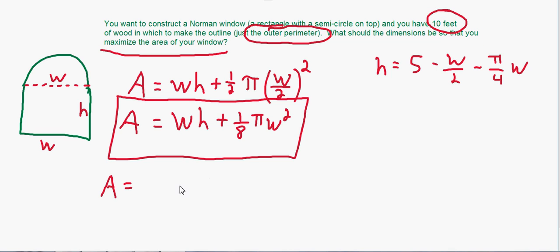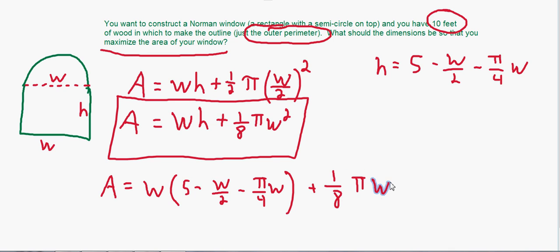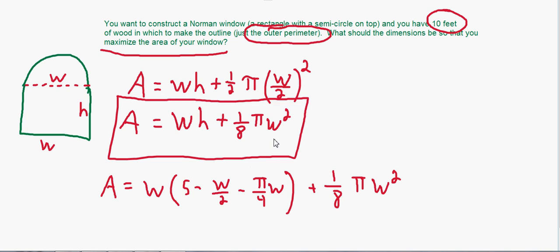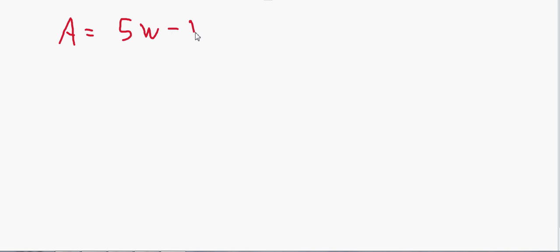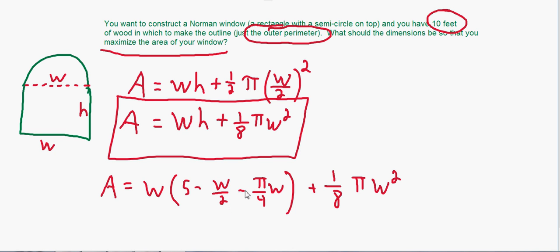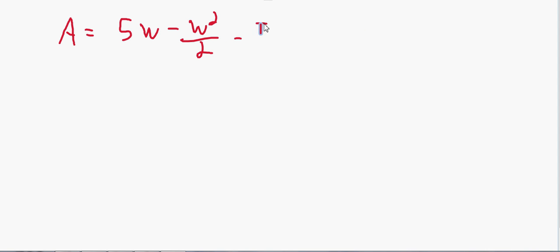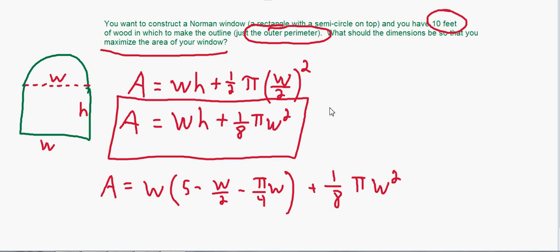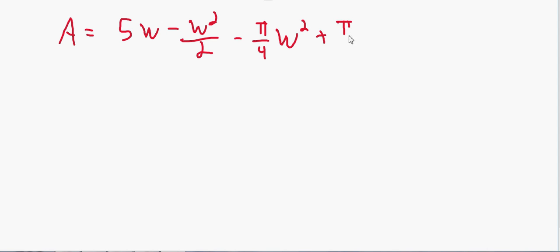Now we can turn our area equation into a function of just one variable. Area = wh + (1/8)πw², and substituting h: Area = w(5 - w/2 - (π/4)w) + (1/8)πw². Expanding: Area = 5w - w²/2 - (π/4)w² + (π/8)w².